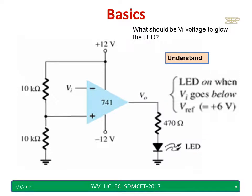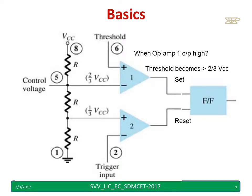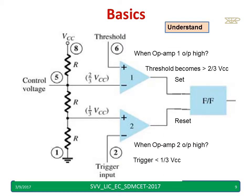Both operational amplifiers are considered in this slide. Op-amp 1 will give a high output when the threshold becomes greater than two-thirds VCC. Similarly, op-amp 2 will give a high output when the trigger becomes less than one-third VCC. Once you understand this slide, you can easily understand the operation of the 555 Timer.